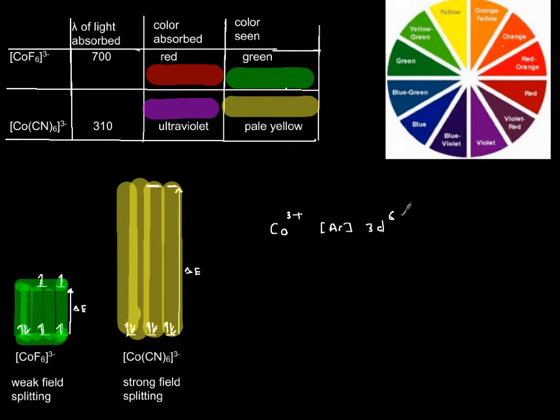Now, if I mix it with fluoride, which has a low splitting effect, it absorbs red light of 700 nanometers, and it will give you green. So this is cobalt mixed with 6 fluoride. It has weak field splitting, and you will see it as green because it has absorbed the red.